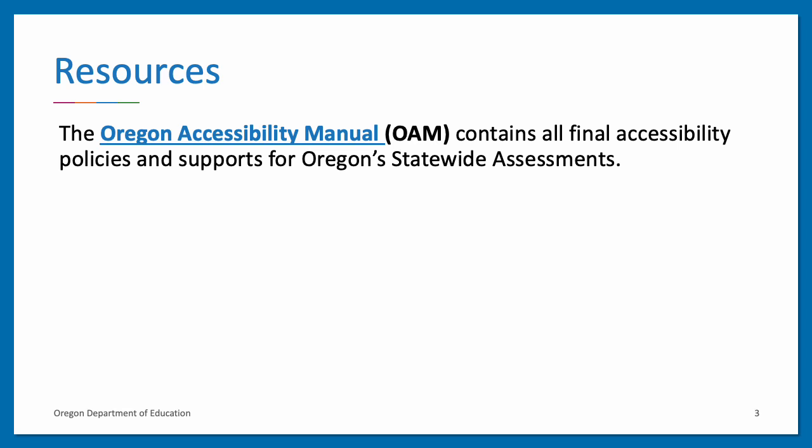The Oregon Accessibility Manual, the OAM, was developed to guide the selection and administration of universal tools, designated supports, and accommodations for the current statewide summative assessments, including Mathematics, English Language Arts, Science, Social Sciences, English Language Proficiency, the Oregon Extended Assessments, and the SEED Survey. Only those supports included in the OAM may be provided to students during the administration of Oregon's statewide assessments.